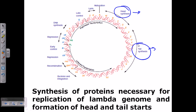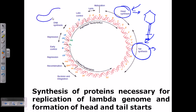Some of these proteins are responsible for producing the head, and some for producing the tail. After producing the head and tail, it is very important to assemble them to produce the matured phage. Before that, their own genetic material — DNA — is produced via replication. This DNA is then taken and packaged inside the phage head.